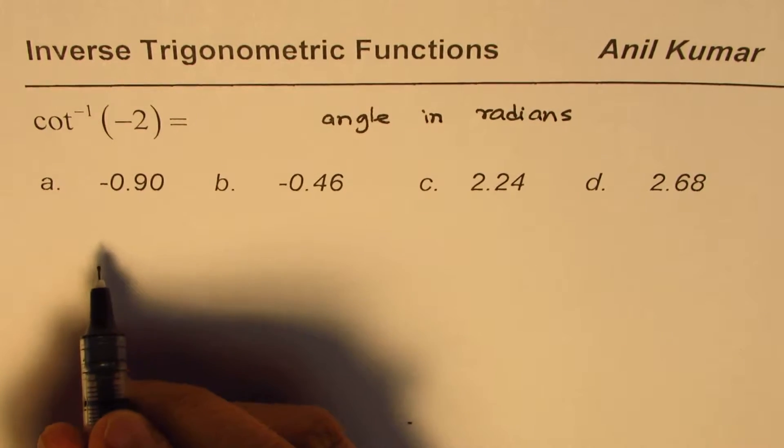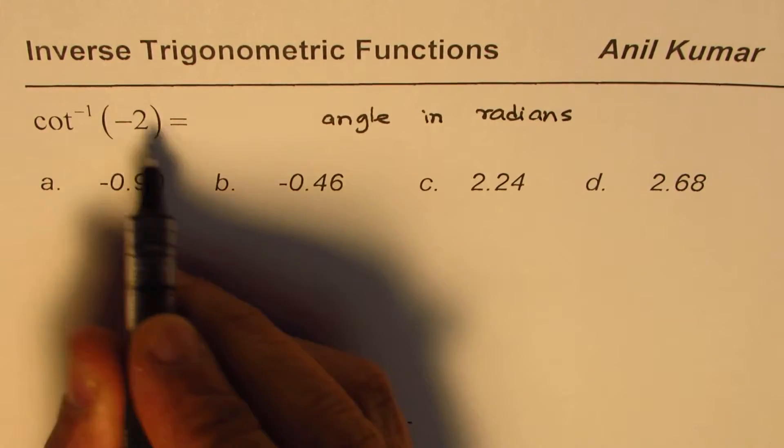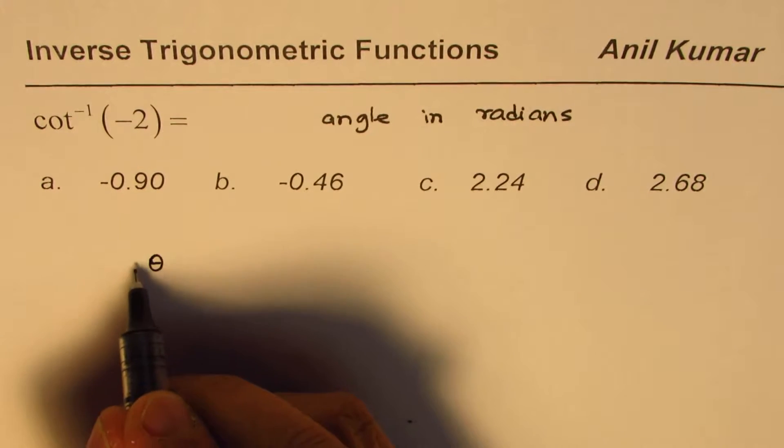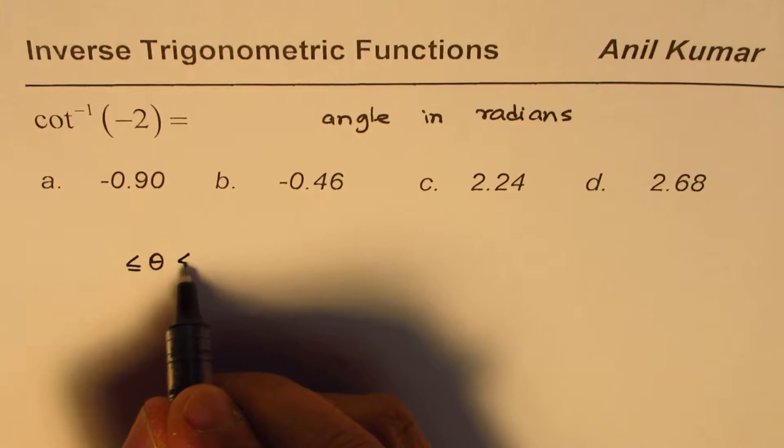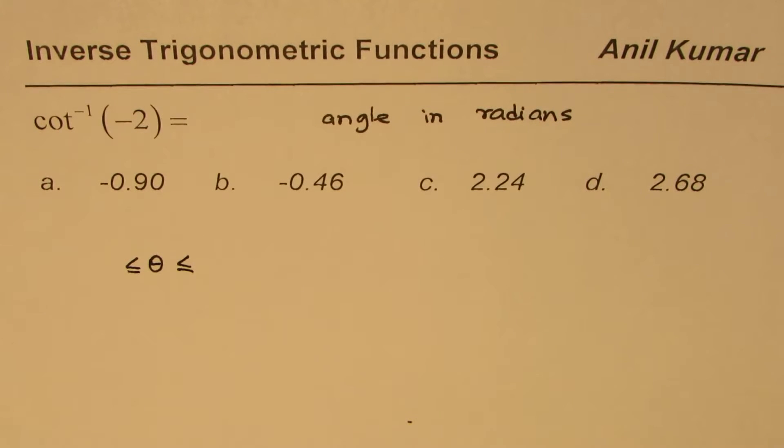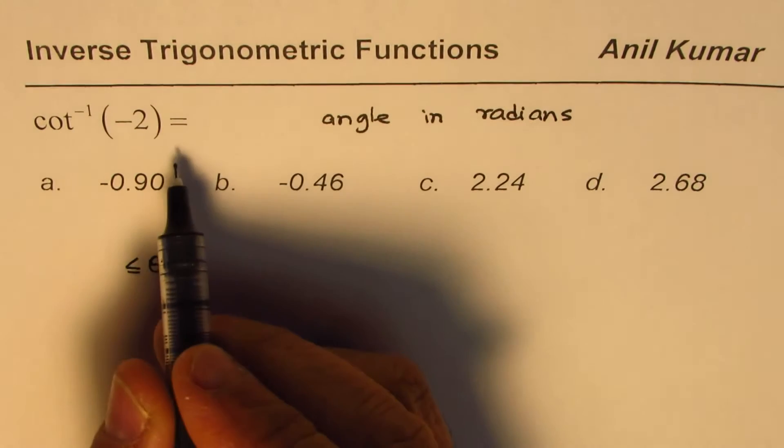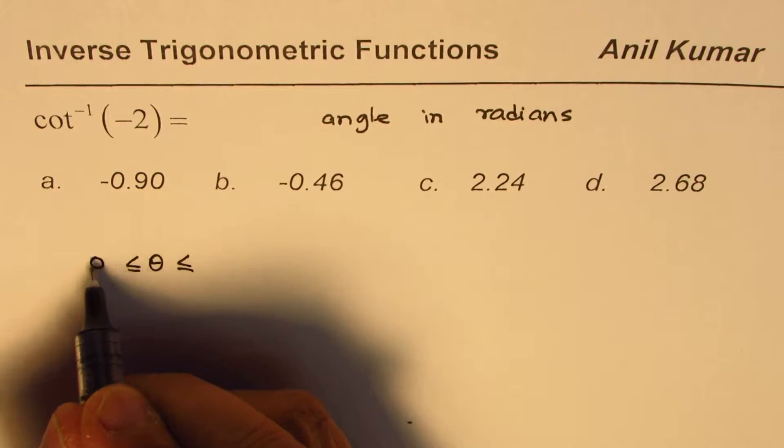The cot inverse function is defined in - the angle theta should be equal to what? That is important to understand. Cot inverse is defined in zero to pi, or zero to three point one four, right?